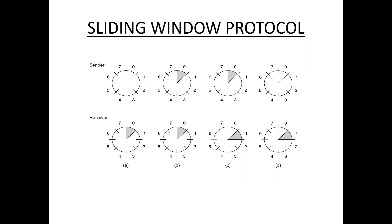In sliding window protocol, the sender sends a fixed number of frames without getting the acknowledgement. Each frame is labeled with a sequence number. On getting acknowledgement from the receiver, the sender sends more frames. Each acknowledgement is labeled with the respective frame sequence number. The sender sends multiple frames to the receiver before getting the acknowledgement for the first frame.